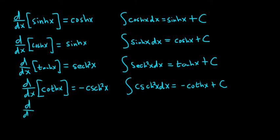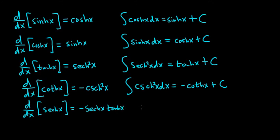If you take the derivative with respect to x of the hyperbolic secant of x, here's where it gets a little bit different from what you're used to. The derivative of secant is secant tangent, but when it's hyperbolic, you have a negative here — so it's negative hyperbolic secant times hyperbolic tangent. When you integrate the right-hand side, the integral of hyperbolic secant times hyperbolic tangent with respect to x equals negative hyperbolic secant plus a constant.